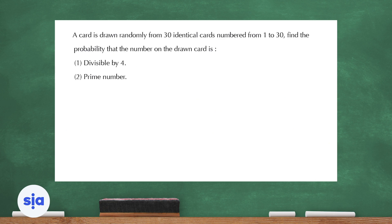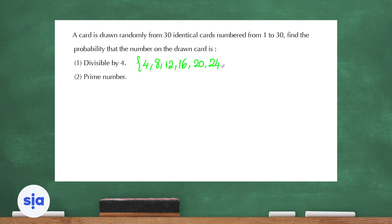A card is drawn randomly from 30 identical cards numbered from 1 to 30. Find the probability that the number is divisible by 4. The multiples of 4 from 1 to 30 are: 4, 8, 12, 16, 20, 24, and 28 — that's 7 numbers. So the probability is 7 out of 30.